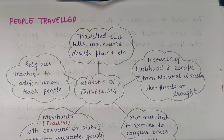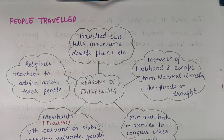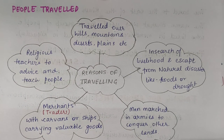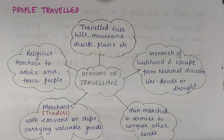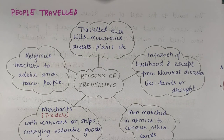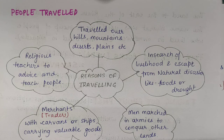Now we have studied about different areas where people started living. Now, why were people travelling? At that period of time, in the past also, people were travelling from one place to another. We want to know why they were travelling — nowadays we travel for occupation, adventure, or enjoying the season. But why did earlier people travel?